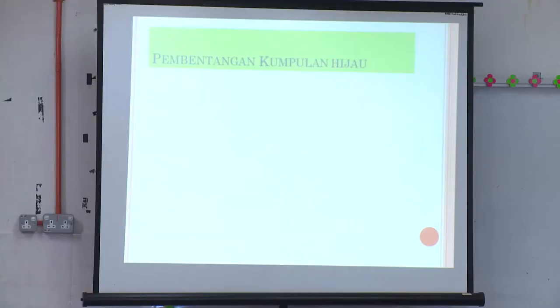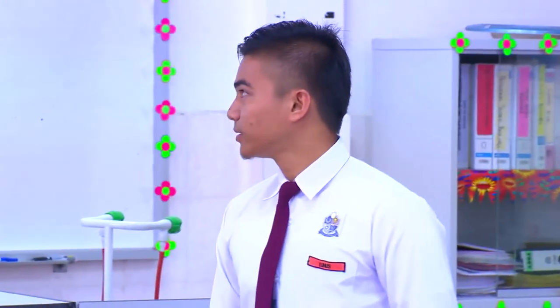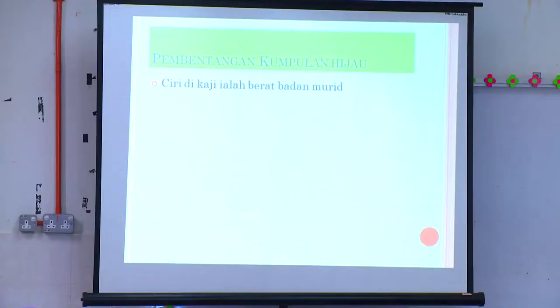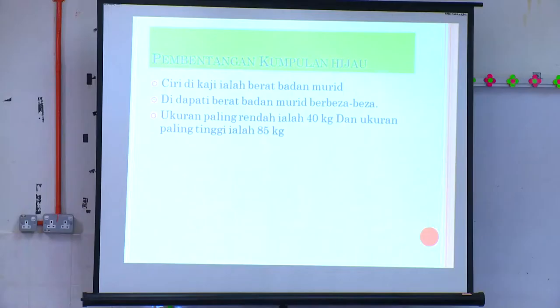Assalamualaikum warahmatullahi wabarakatuh. Saya wakil Kumpulan Hijau ingin membentangkan hasil kerja dan perbincangan kami. Ciri yang dikaji ialah berat badan. Didapati berat badan murid berbeza-beza. Ukuran paling rendah ialah 40 kg dan ukuran paling berat adalah 85 kg. Berat badan paling kerap ialah antara 61 kg hingga 67 kg. Keputusan ini menunjukkan bentuk graf taburan normal.